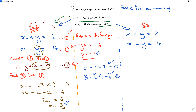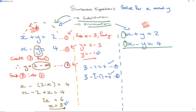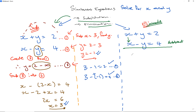Now let's look at elimination. With elimination, two coefficients must be exactly the same or negatives of each other. The coefficient is the number in front of x — both are 1 here. If they're exactly the same, subtracting the equations eliminates x. Subtracting equation 2 from equation 1: x minus x equals 0, y minus (minus y) equals 2y, and 2 minus 4 equals negative 2. So 2y equals negative 2, giving y equals negative 1.